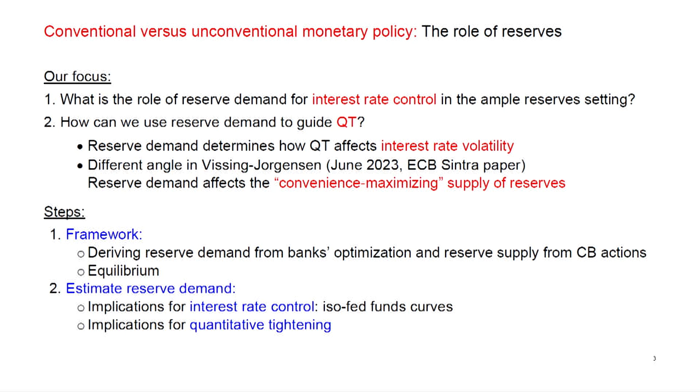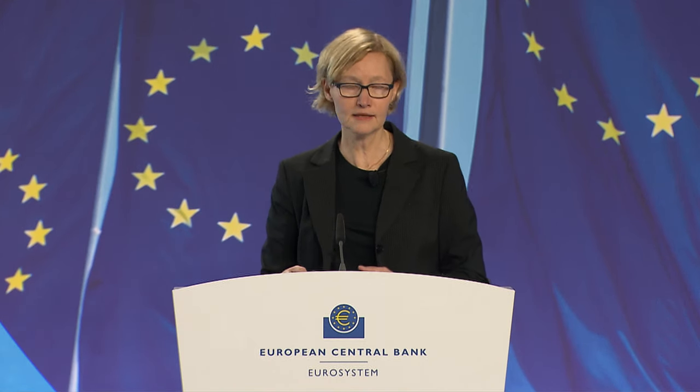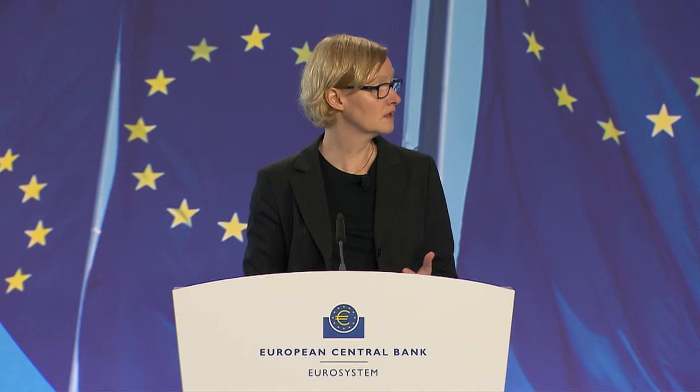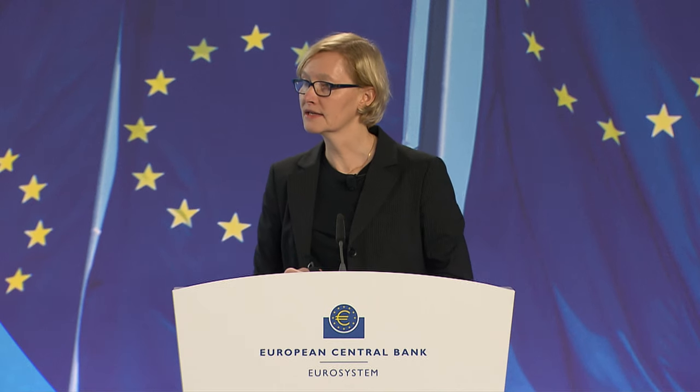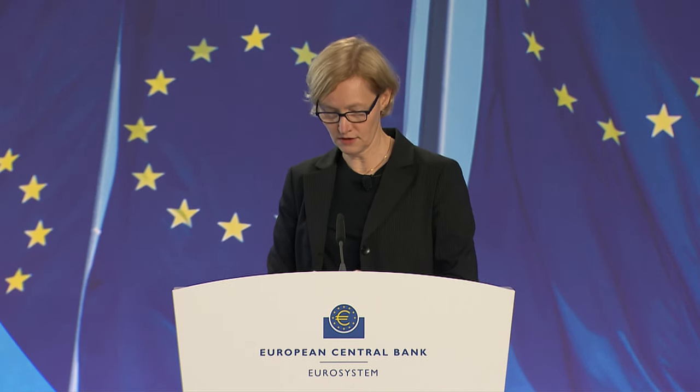Back to the current paper, I'm going to do this in two steps. First, I lay out a framework for thinking about the demand and supply of reserves and the equilibrium — that's the question of interest rate control. Then I'm going to estimate this empirically. There are going to be two useful outputs: one will be the ISOFED funds rate curve, which is a schedule for how to set the interest rate on reserves as a function of the balance sheet size to hit a given target. The second is estimating how much QT is feasible from an interest rate volatility perspective.